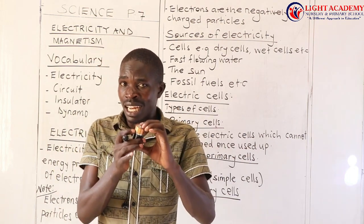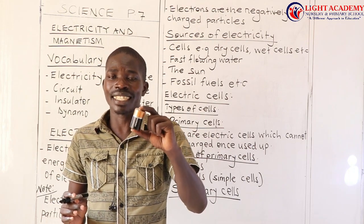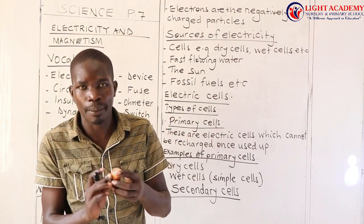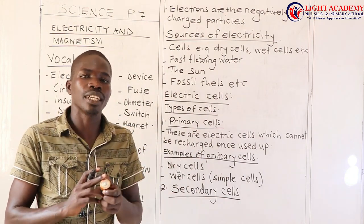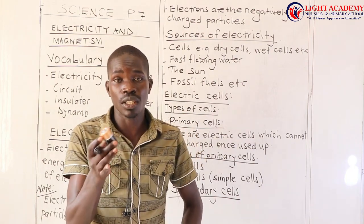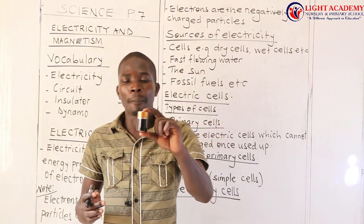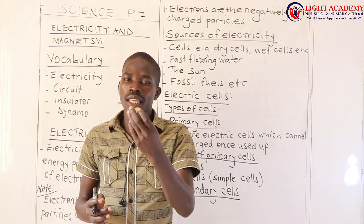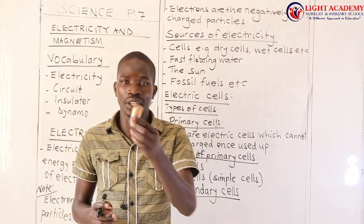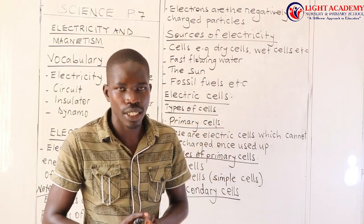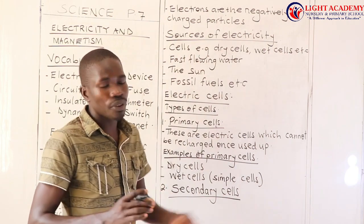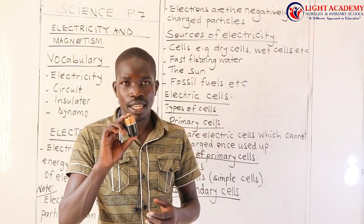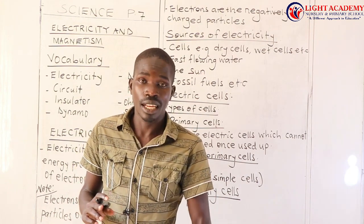The form of energy stored in a dry cell is chemical energy. A dry cell is an example of a primary cell. When you use it and it gets exhausted, even if you start charging it, it cannot do anything — that is why we call it a primary cell, because it cannot be recharged once used up. The dry cell is also a source of electricity because it produces electric energy.